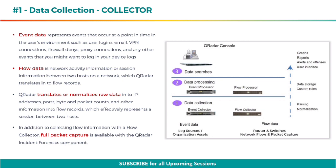Event data represents events that occur at a point in time in the user's environment, such as user logins, email, VPN connections, firewall denies, proxy connections, and any other events that you might want to log in your device logs. Flow data is network activity information or session information between two hosts on a network, which QRadar translates into flow records. QRadar translates or normalizes raw data into IP addresses, ports, byte and packet counts, and other information into flow records, which effectively represents a session between two hosts. In addition to collecting flow information with a flow collector, full packet capture is available with the QRadar Incident Forensics component.